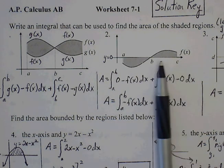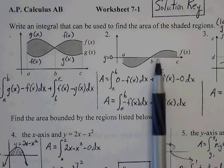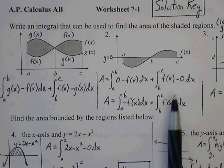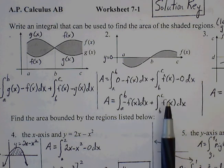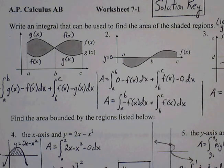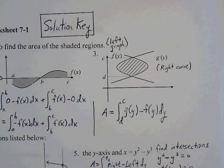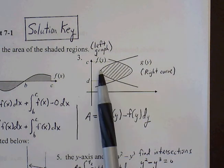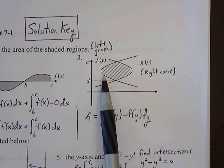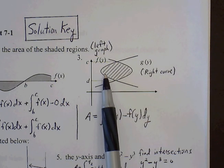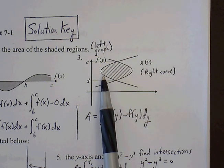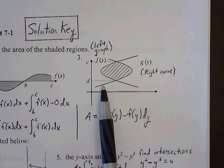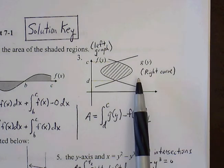Second region, top curve now will be the f of x and the bottom curve is now going to be y equals 0. So f of x minus 0 would be just f of x definite integral from b to c. Now this third graph, we see that these two curves are no longer oriented above each other with there being a top and then the other one being a bottom. These two are now oriented to the left and to the right of each other. So we have to think of this as right curve minus left curve.